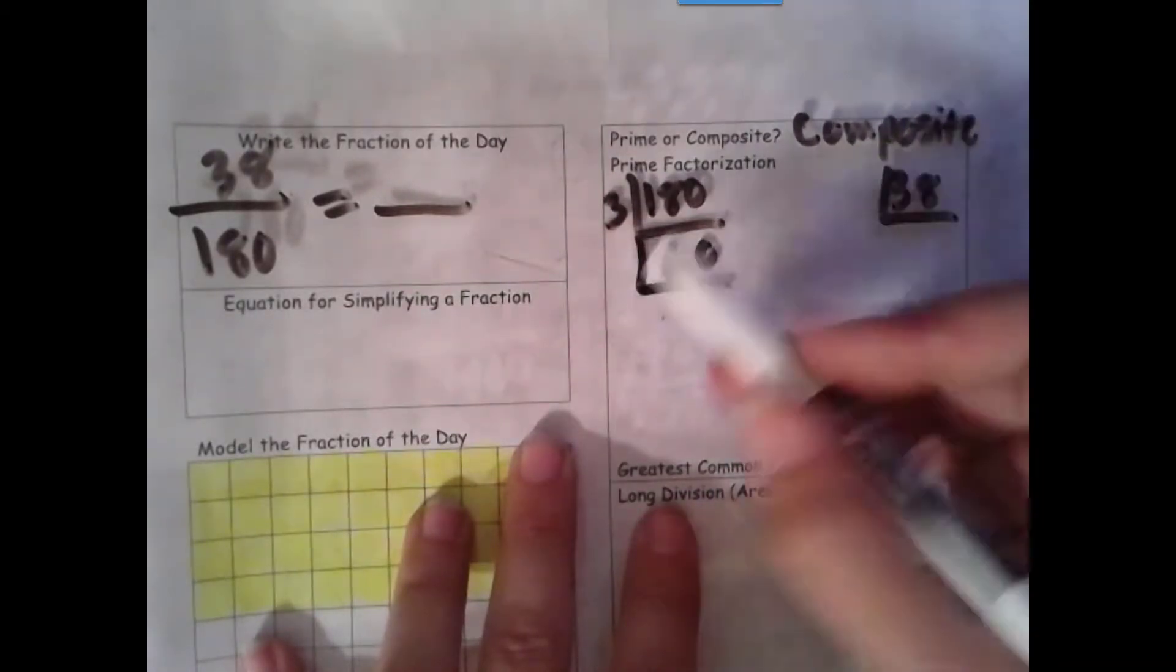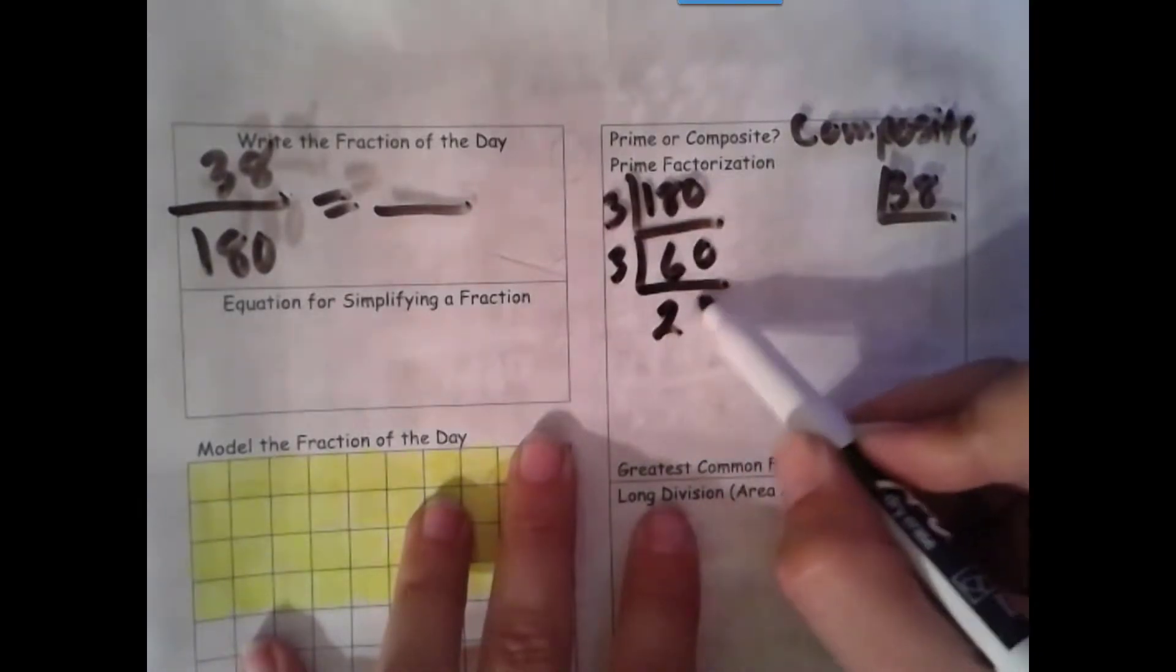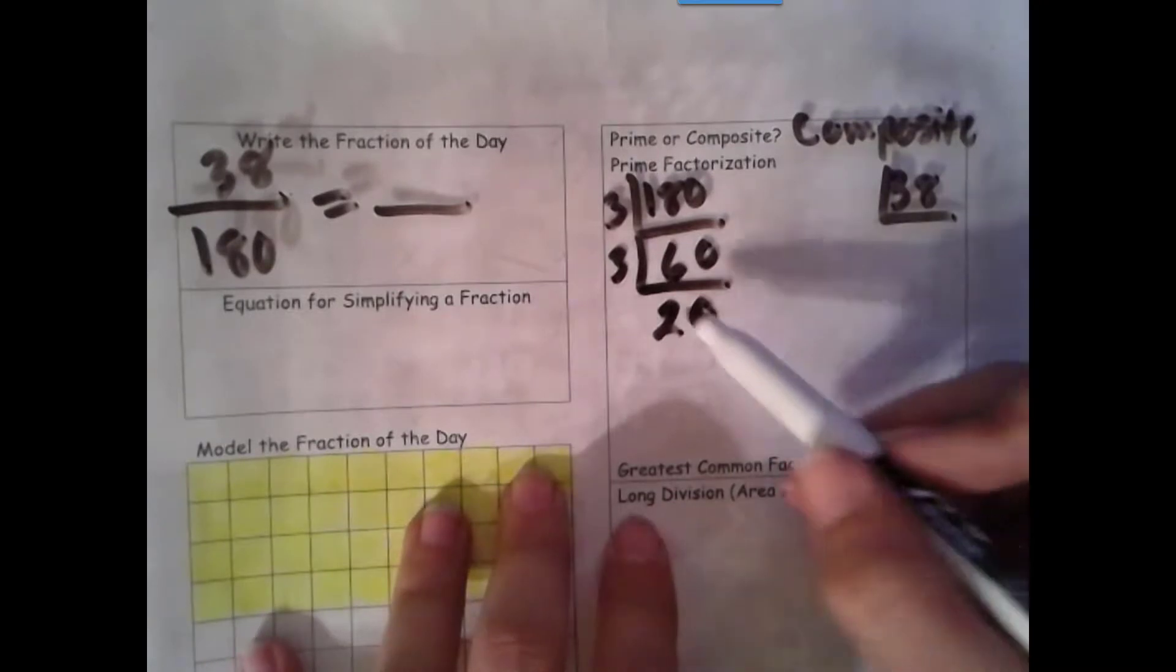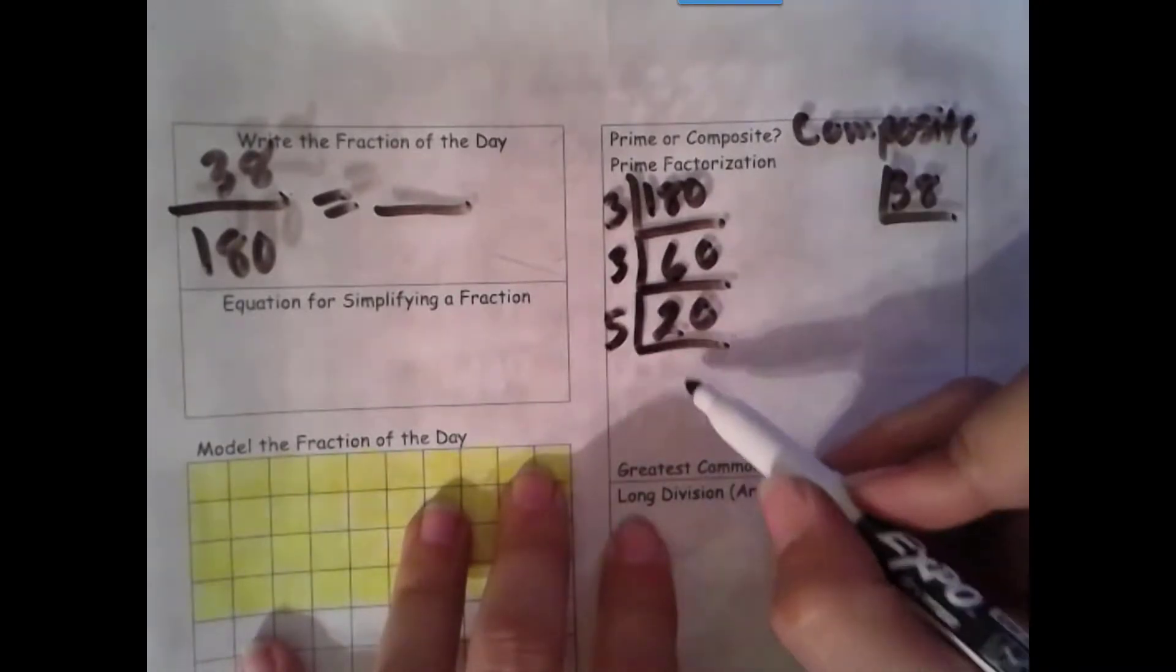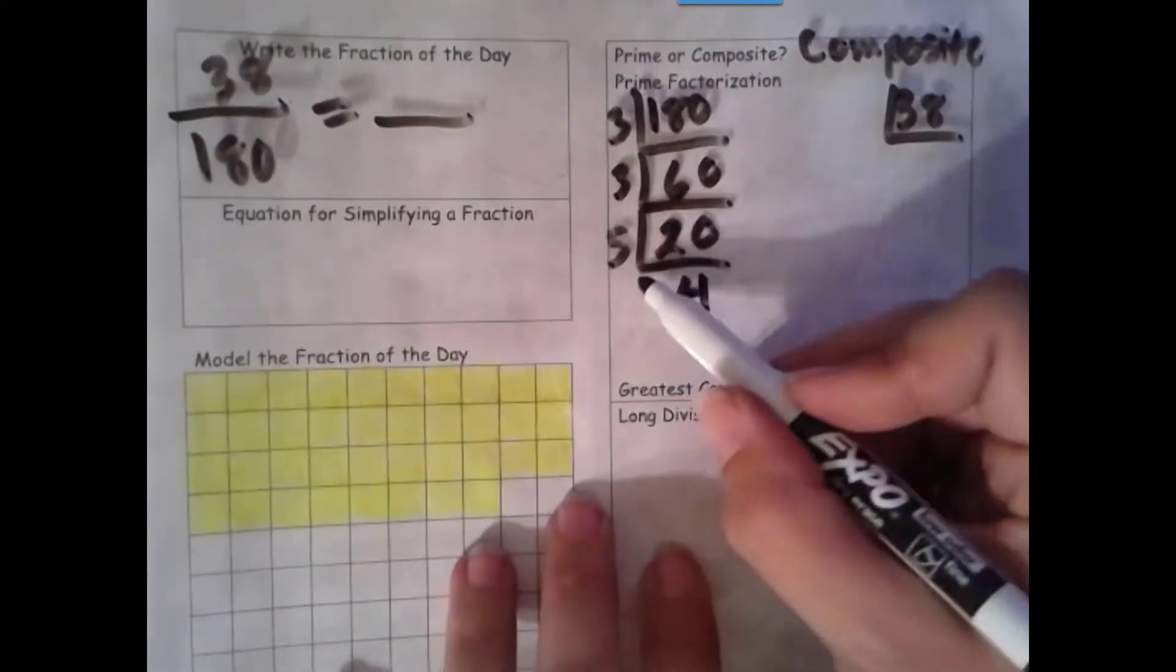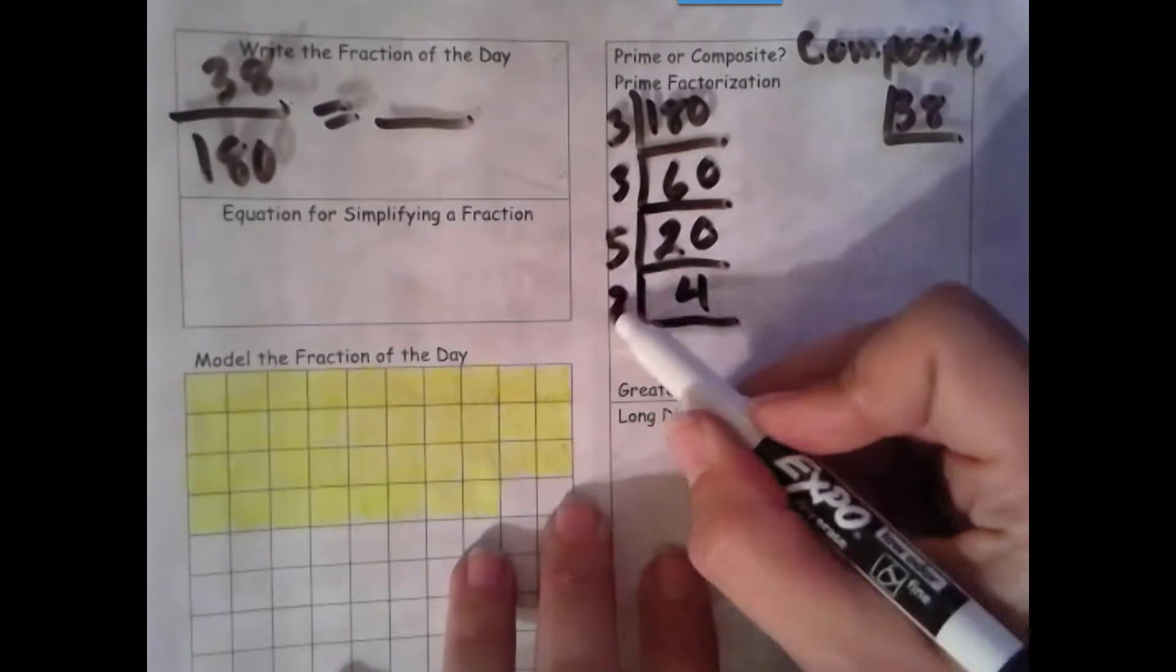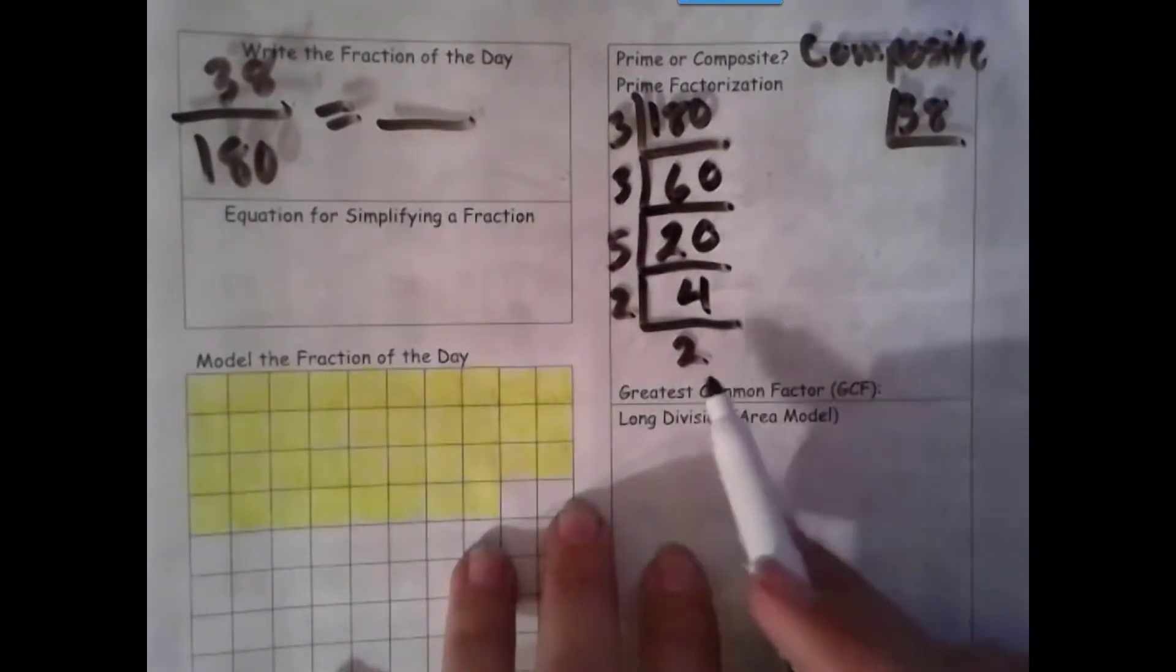6 plus 0 is 6. That is also a multiple of 3. 3 times 20. That ends in a 0, so 5 is a factor. 5 times 4. That's even, so I can divide by 2, and I get 2. I keep going until I have a prime number at the bottom as well.